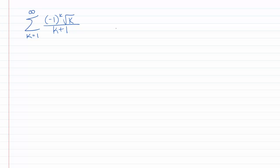It has an a sub k equal to square root of k over k plus 1 — that's the part that's not alternating. This is an alternating series, and I can see that it's behaving like 1 over square root of k. So I suspect it will probably meet the alternating series test conditions, because 1 over square root of k is probably decreasing and going to zero. I also think it's not going to converge absolutely, because 1 over square root of k doesn't — it's a p-series. But let's go ahead and check all this.